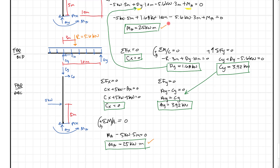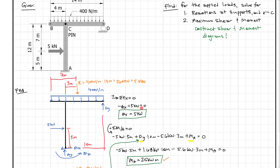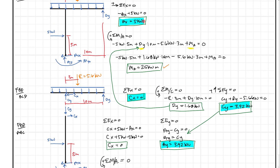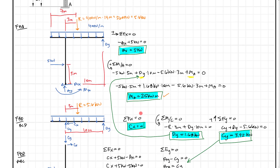So that covers the reactions. To solve this problem, we had to break the structure apart at pin C, which gave us more equations to work with. In total, we solved for all six reactions: AX, AY, MA, CX, CY, and DY. Next, we'll take these reactions and draw the load, shear, and moment diagram to find the maximum shear and moment. Click the video on screen now, and keep moving onward and upward.